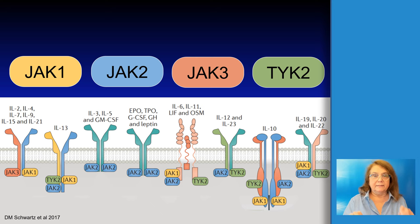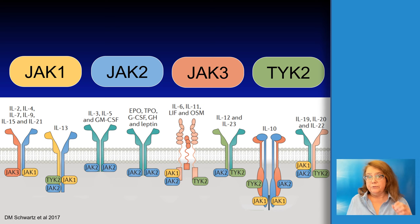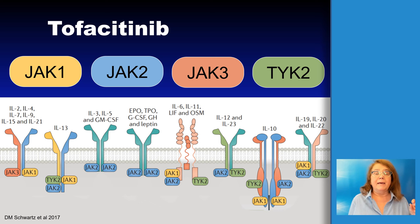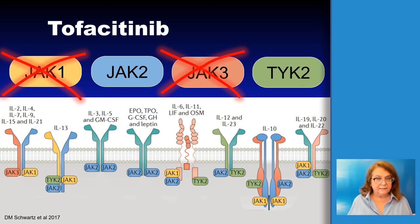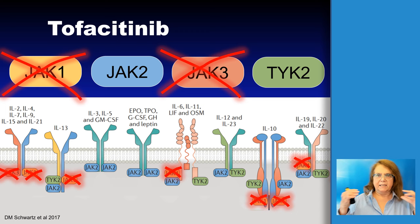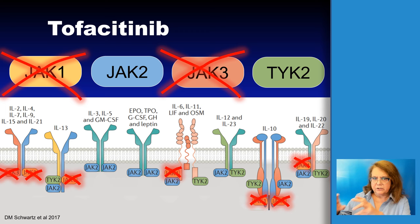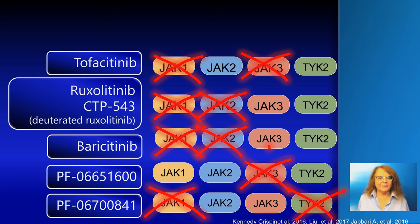By knowing this, we can conclude the activity of which cytokines will be inhibited by various drugs. For example, tofacitinib is inhibiting mainly JAK3 and JAK1, and by knowing this we can conclude which cytokines will be inhibited. We also know which cytokines are most important for the pathogenesis of alopecia areata, and by knowing this we can transfer that knowledge to the level of JAK inhibitors.